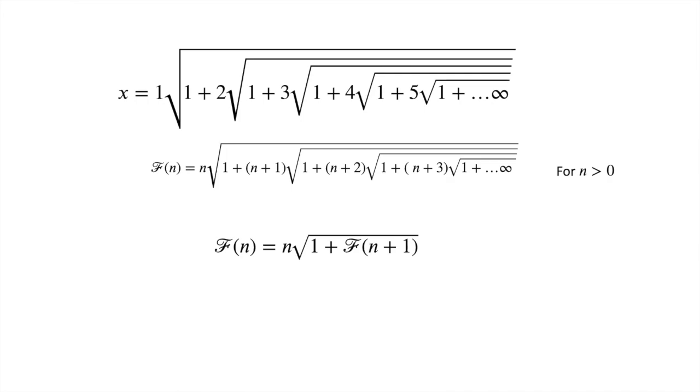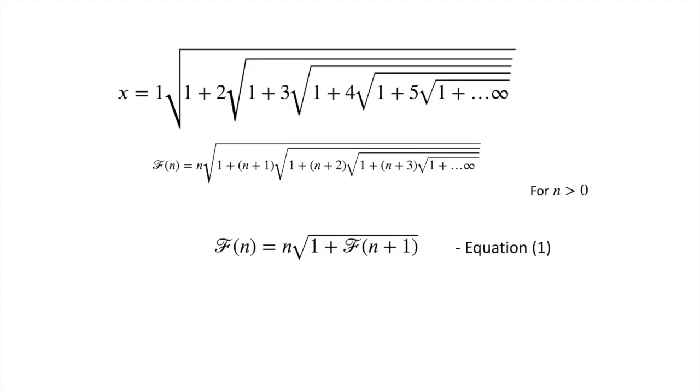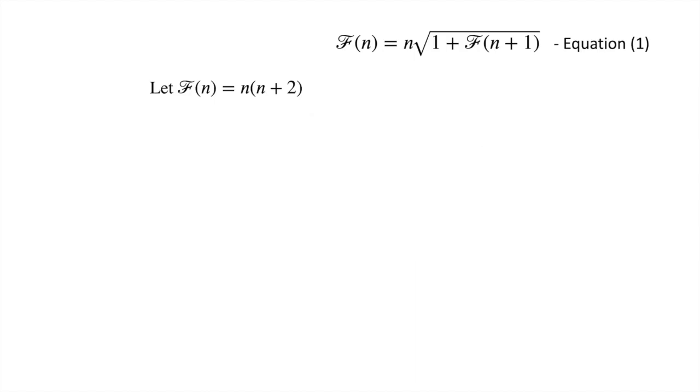That means our function of n comes out to be n times square root of one plus function of n plus one. Now let's name this equation as equation one, and now let's assume f of n as n times n plus two.